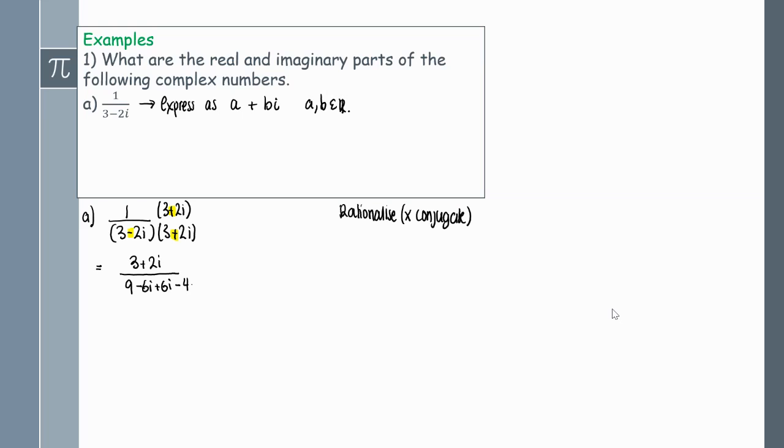So I'll get 9, let's just check they do, minus 6i plus 6i from the 2i times 3, and then we'll get minus 4i squared from minus 2i times positive 2i. The minus 6i and the plus 6i cancel out and the i squared is really just negative 1, so we substitute that in. On the top it remains the same. On the denominator we get 9 minus 4 times minus 1, which becomes 9 plus 4. So I have 3 plus 2i over 13.